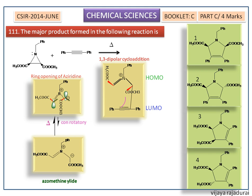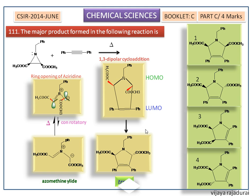We get a five-membered heterocyclic compound. Usually, 1,3-dipolar addition is a syn addition, but since this is a trans 1,3-dipolar compound, we get the trans product during 1,3-dipolar cycloaddition. This product corresponds to the second option, so the correct answer is the second option.